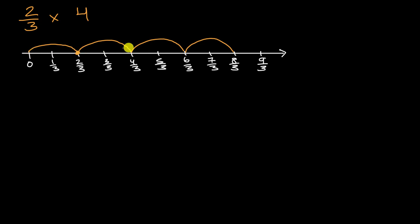So we just took four jumps of two thirds each. You could view that as two thirds plus two thirds plus two thirds plus two thirds. And where does it get us to? It got us to eight thirds. So notice, two thirds times four is equal to eight thirds.